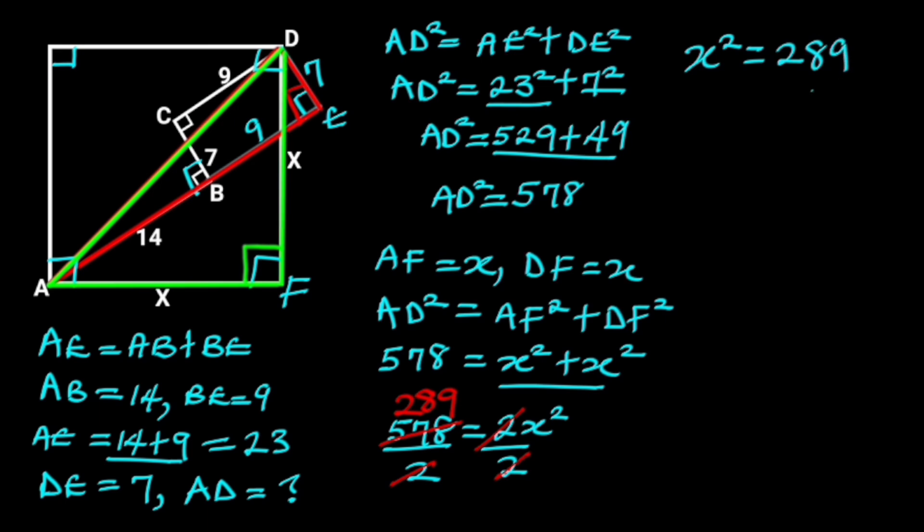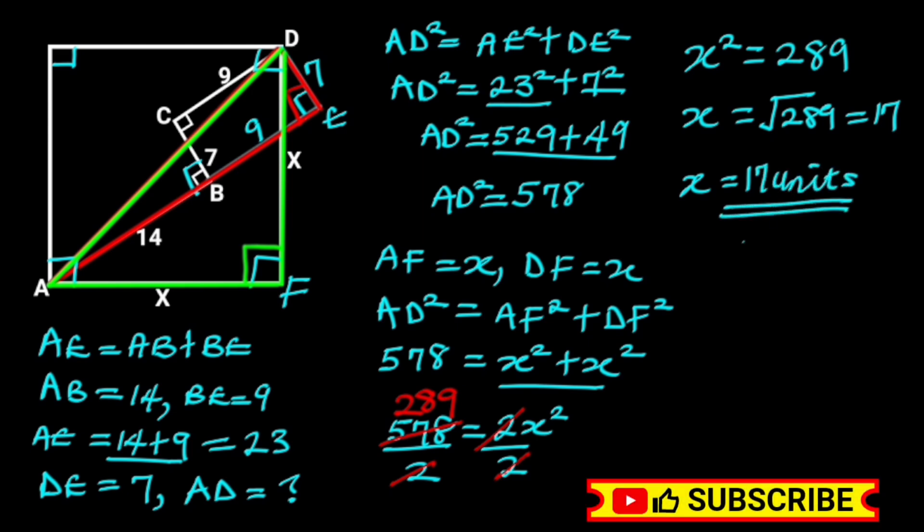Taking the square root of both sides will give us X is equal to square root of 289. Square root of 289 is 17. Hence, the length of the square is 17 units. Thanks for watching. If you like this video, make sure to subscribe for more.